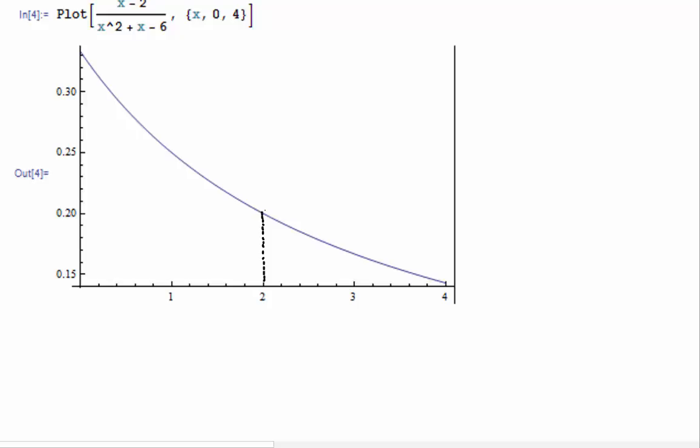As x goes towards 2, the function does not take the value. The computer does draw a straight line there, but technically there's an open hole. The function does not take that value but is tending to the value of 0.2.